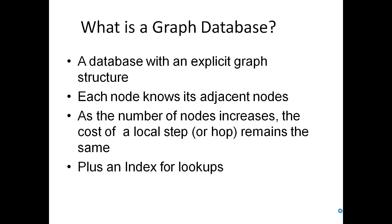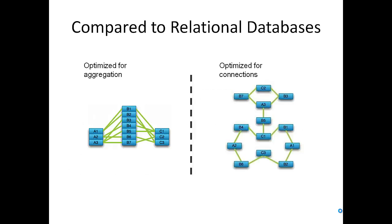A database with an explicit graph structure is a graph database. Each node knows its adjacent nodes. As the number of nodes increases, the cost of a local step remains the same, and there's also an index for lookups. Compared to relational databases, graph databases are optimized for connections, while relational databases are optimized for aggregations.